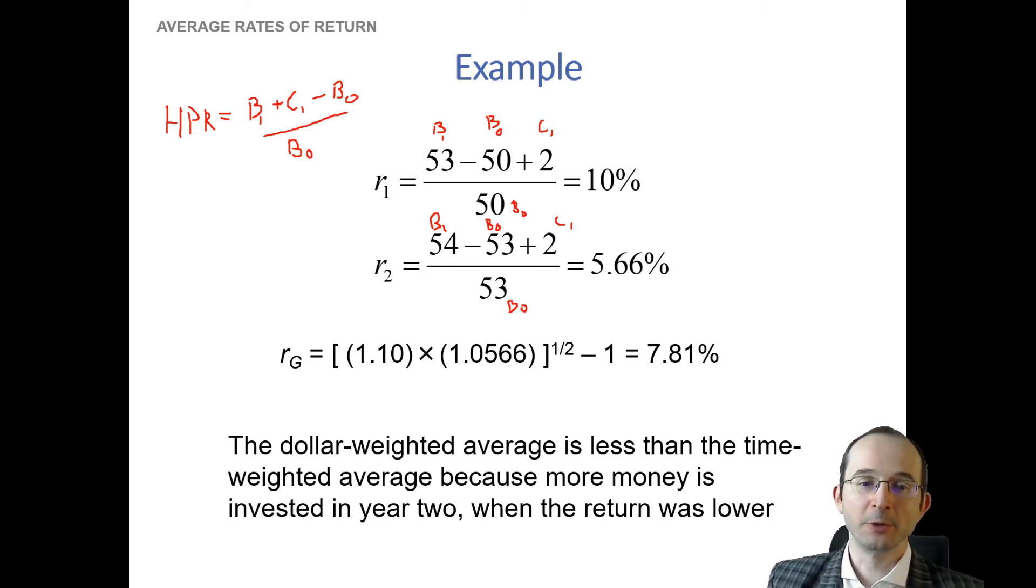Now, so what we're going to do is we're going to compound these holding period returns. So we're going to take 1 plus 10% times 1 plus 5.66%. We compounded two returns, so we now have to take the square root to get the average per period return. And that comes to 7.81%.